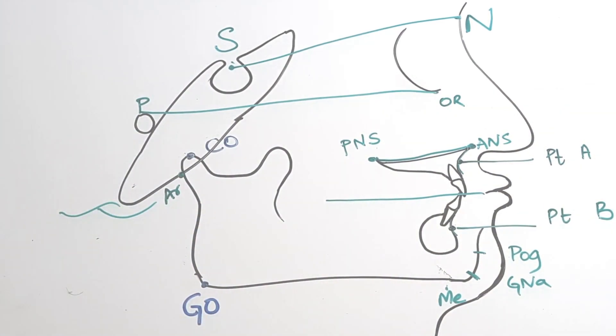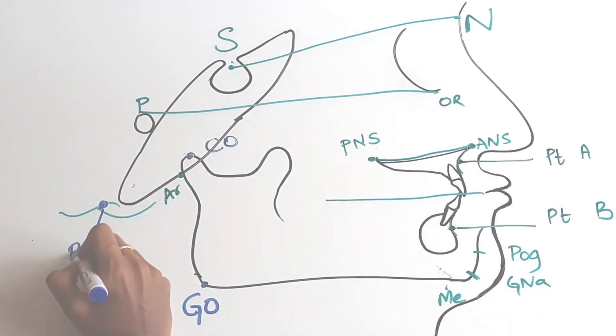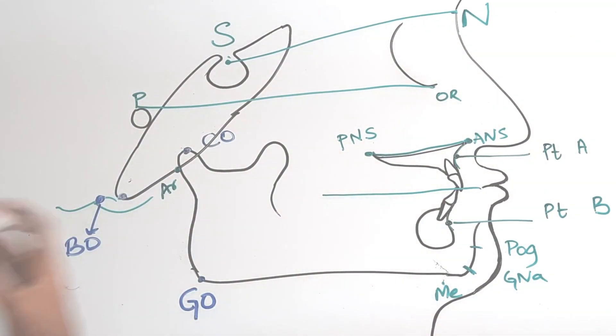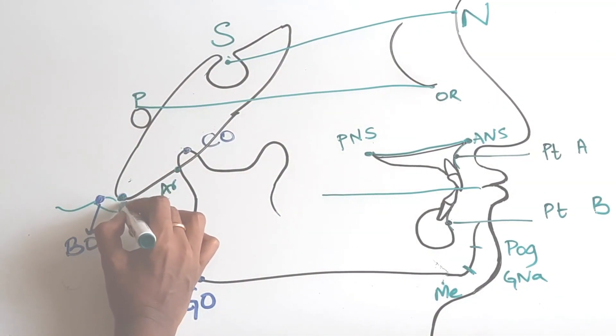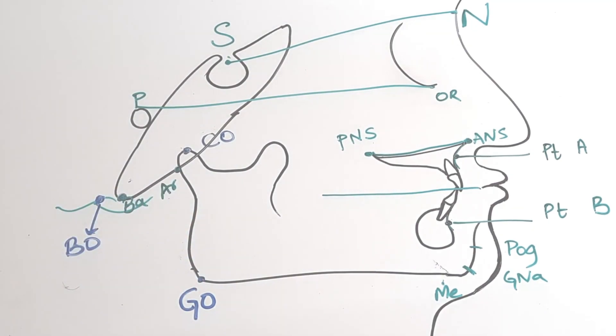Next is Bolton's point. It is the highest point on the upward curvature of the retrocondylar fossa. Basion, BA, is the lowest point on the anterior medial margin of the foramen magnum in the mid-sagittal plane.